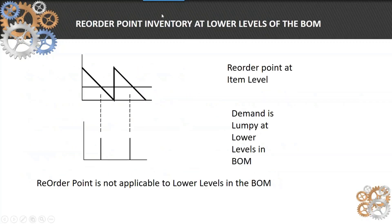Reorder point is fine at that top level, at the independent demand level. It works fairly regularly, and you can put that reorder point calculation at the end item in your item planning data.